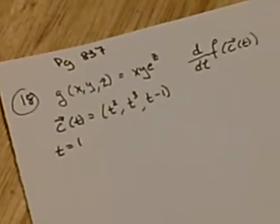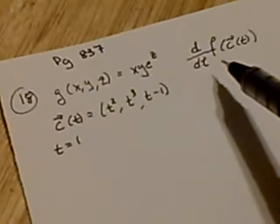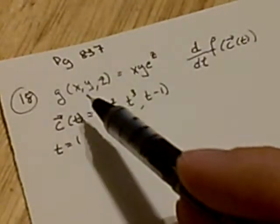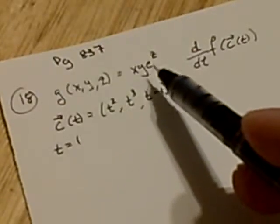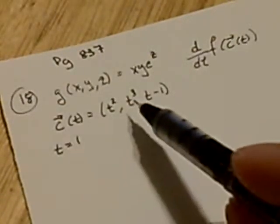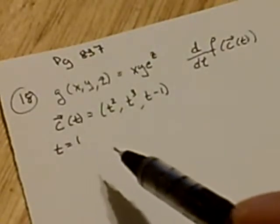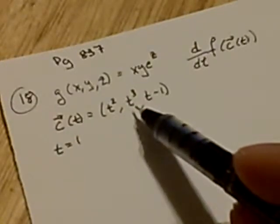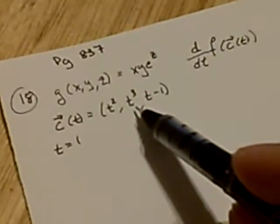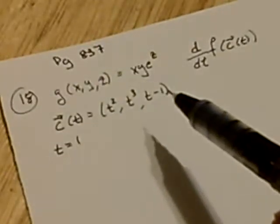Alright, here's a problem. We're asked to calculate the rate of change of a function along a path. The function in this case is a function of 3 space: x, y, e to the z. We have a curve through 3 space, and we're asked to do this at a particular time, at t equals 1. So this corresponds to a point on the curve, and we're going to find the change of the function g at that point on the curve.